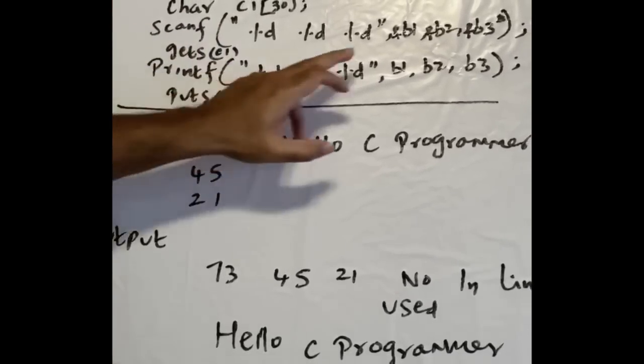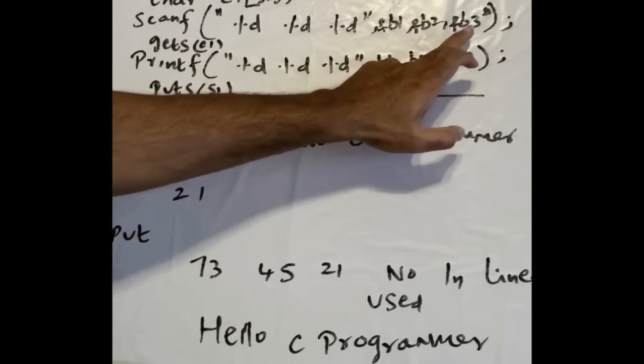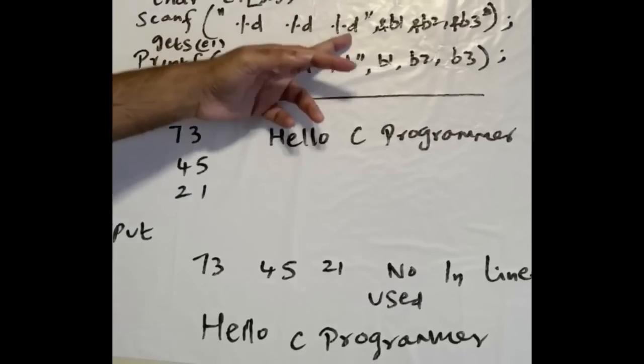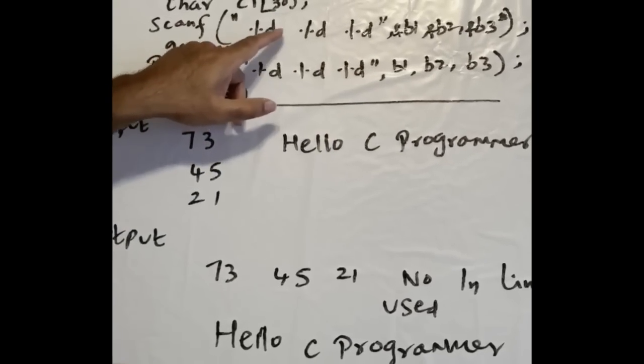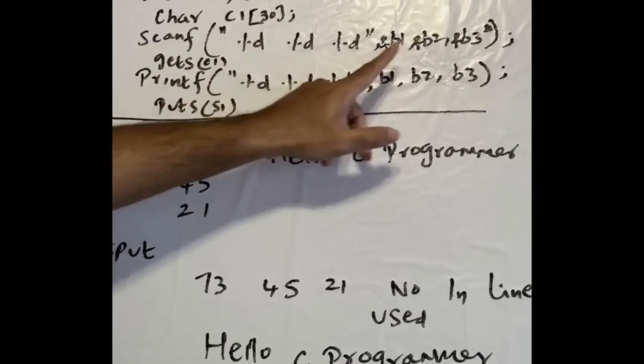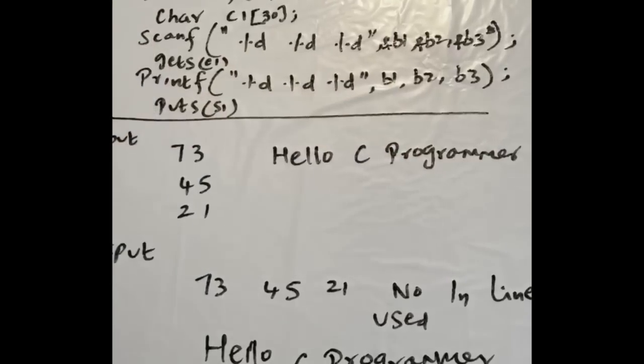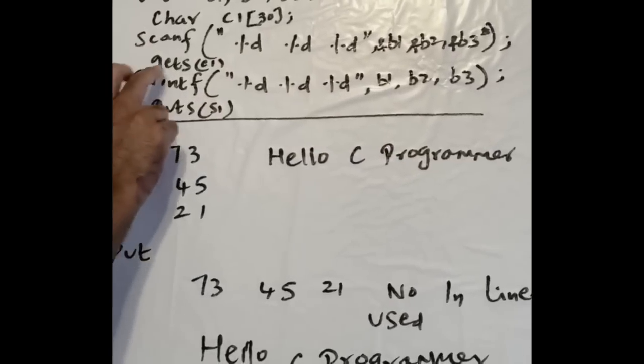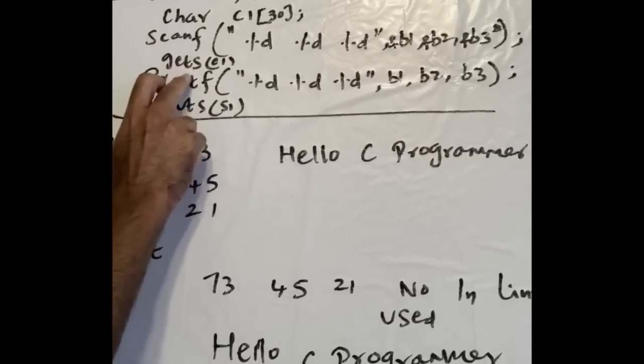Scanf is the input statement. We get three input values: %d means decimal, so they are defined - b1 is %d, b2, b3 are integers.